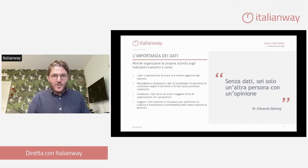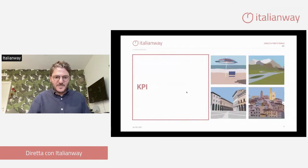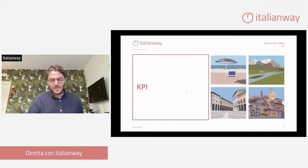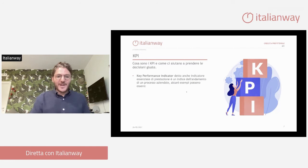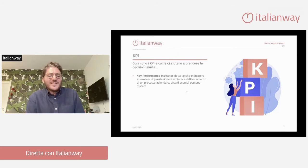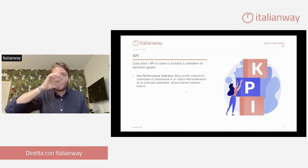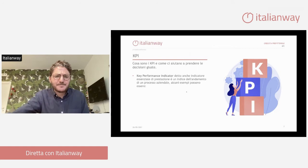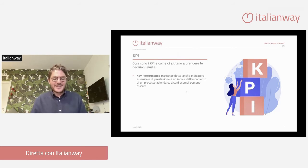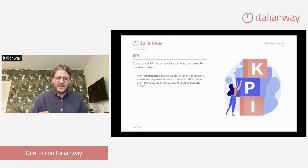Parliamo di KPI, Key Performance Indicator. Cos'è questa parola? Un KPI altro non è che un indice dell'andamento di un processo aziendale. Qualsiasi processo aziendale noi analizziamo, che sia una fabbrica di scarpe, che sia un hotel o una casa vacanze, ogni attività ha i suoi KPI. Questi sono degli indicatori essenziali, Key vuol dire chiave, quindi dei valori chiave che ci dicono qual è l'andamento dell'attività.